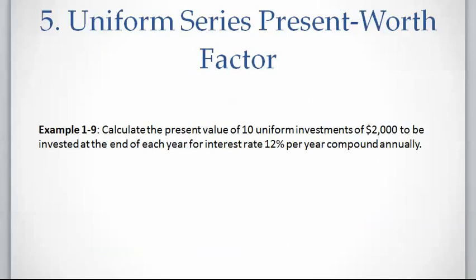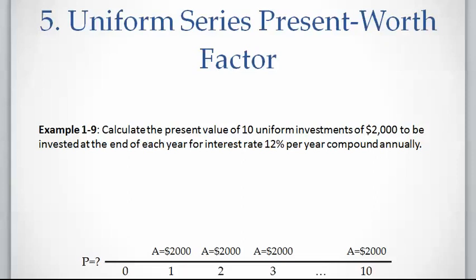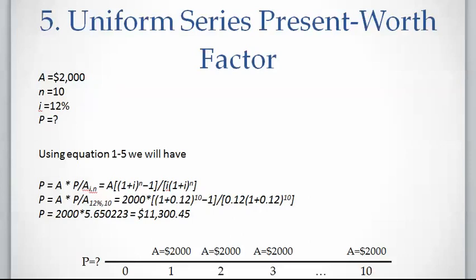For example: what would be the present value of 10 uniform investments of two thousand dollars invested at the end of each year at an interest rate of 12 percent compounded annually? First, we draw the timeline. The left-hand side is present time, time zero, and the payment P needs to be calculated. N equals 10 because there are 10 uniform investments — 10 years — and above each year we have two thousand dollars, starting from year one to year ten. So A equals two thousand dollars, n is 10, and interest rate is 12 percent.